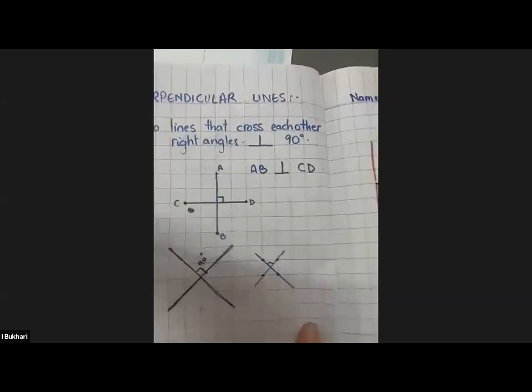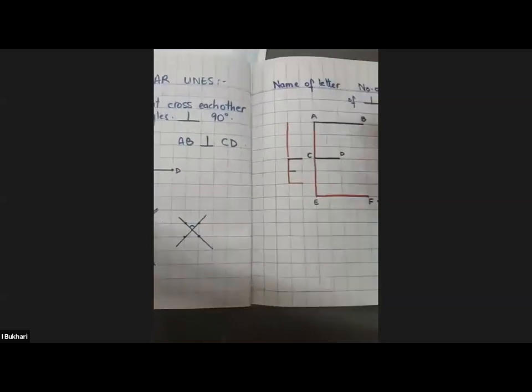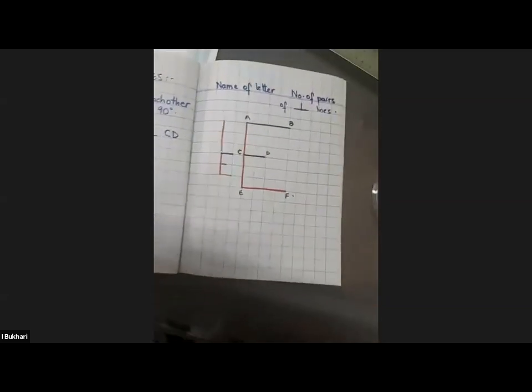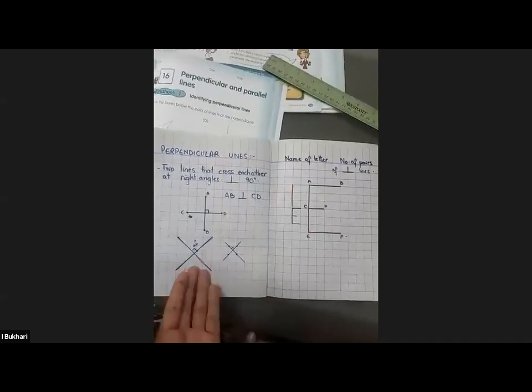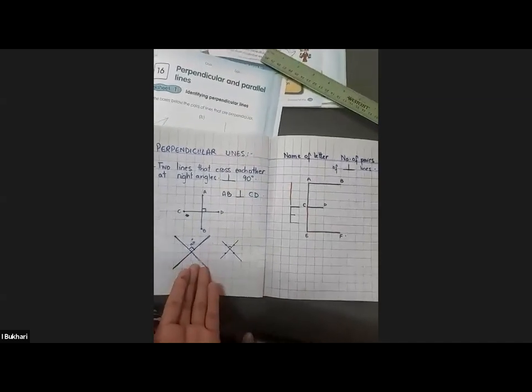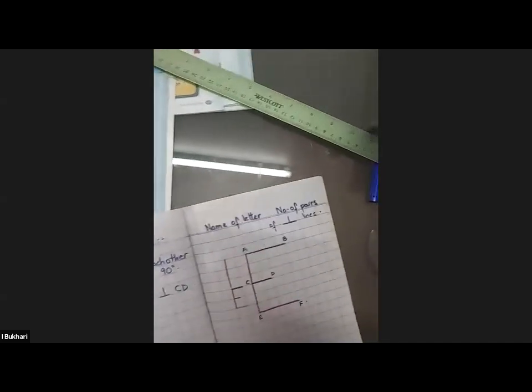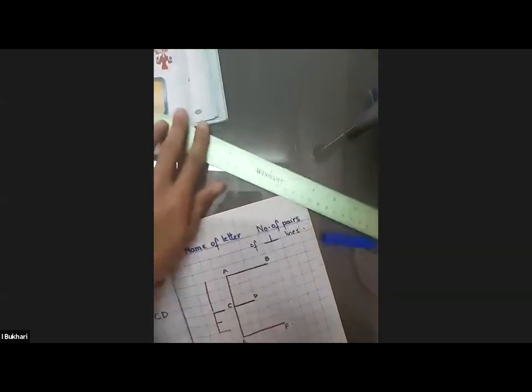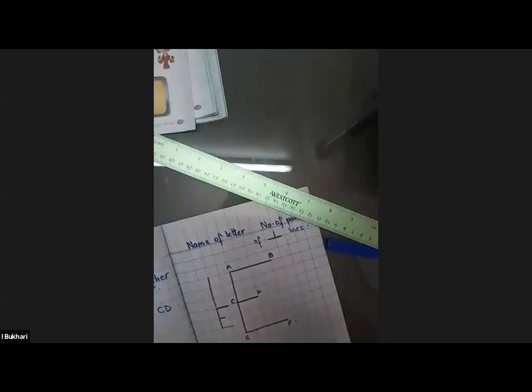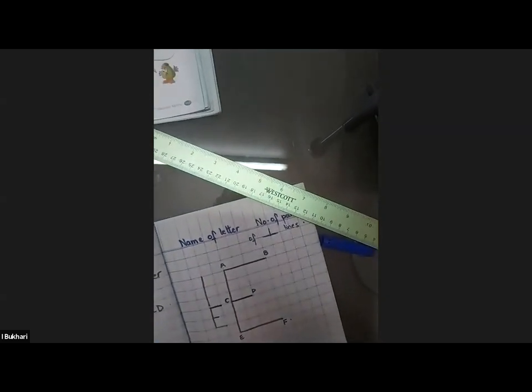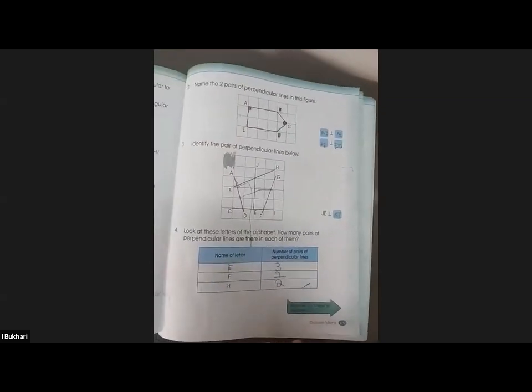After we have recognized what perpendicular lines are — lines that cross each other at right angles — let us do one question from your book, and that is question number four on page 109.